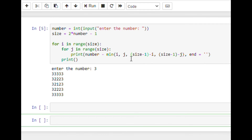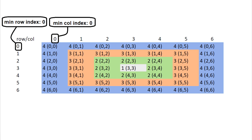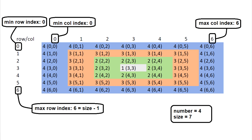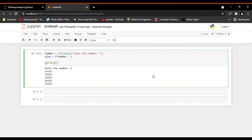Let's quickly discuss what we have done in this code. We are finding the minimum distance from the minimum index (0) and from the maximum index (size minus 1), checking this for both row and column. After getting the minimum distance value we subtract it from the number to get the value to print at each position. Finally, let's make this code even more concise with the help of list comprehension.